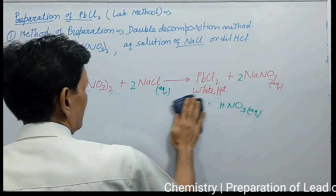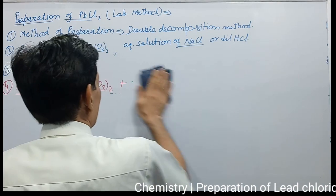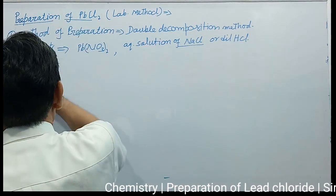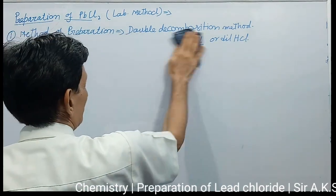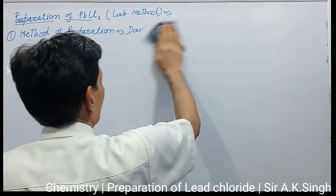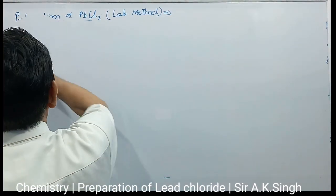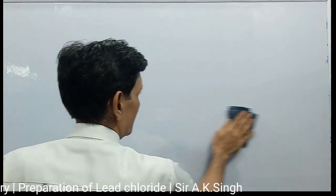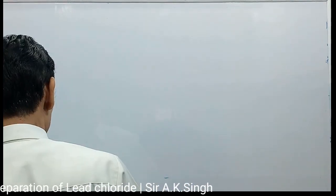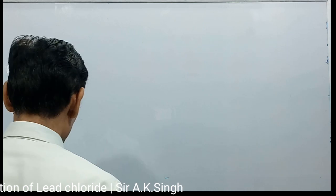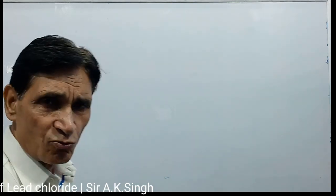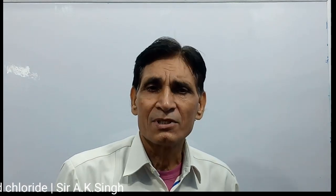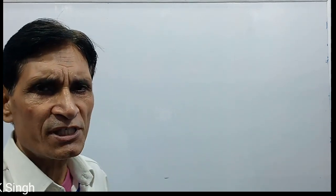Calcium carbonate is a compound which is light, having less density, and is insoluble in water. It is a light white amorphous solid. Let us see how it is prepared.